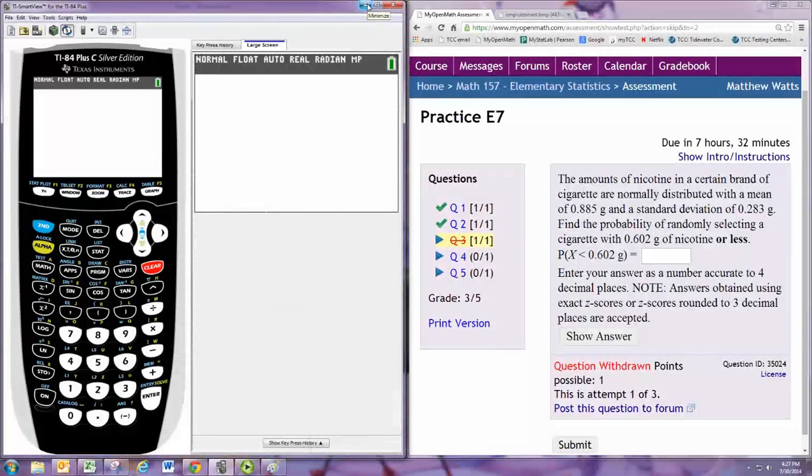In this video we'll see how to do practice problem 3 from Experience 7. The amounts of nicotine in a certain brand of cigarette are normally distributed with a mean of 0.885 grams and a standard deviation of 0.283 grams.